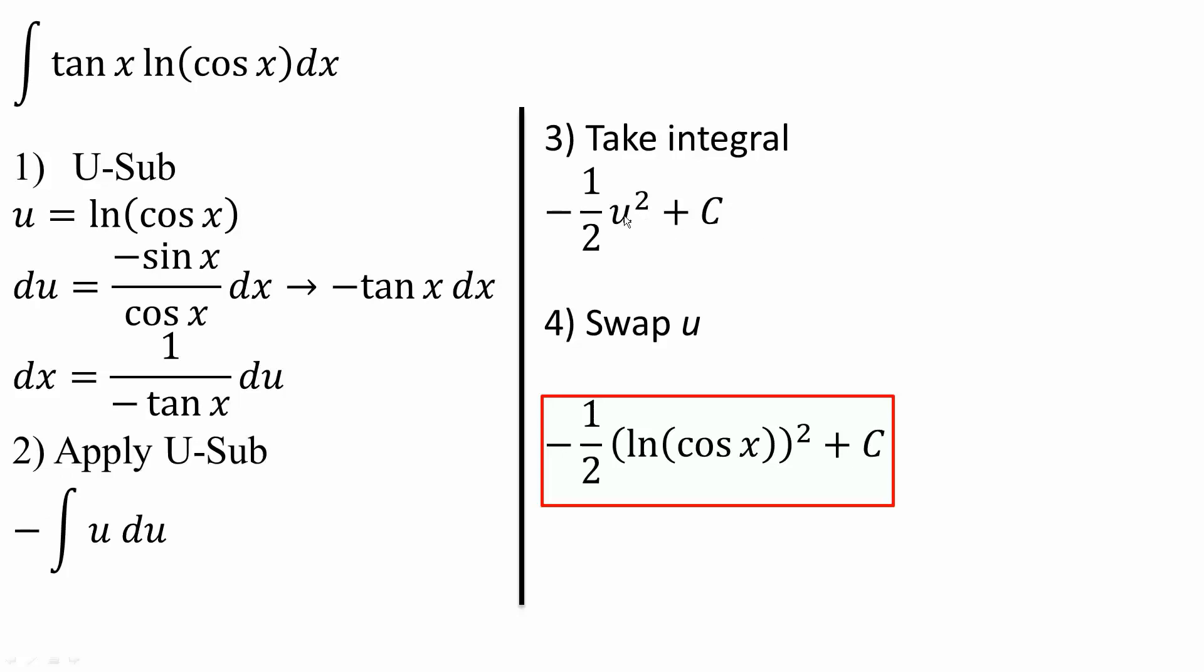Finally, swap u. We know that u is equal to ln(cos x). And so our final answer will be negative 1/2 (ln(cos x))^2 plus C. This right here is our final answer, and that's all we need to do for this problem.